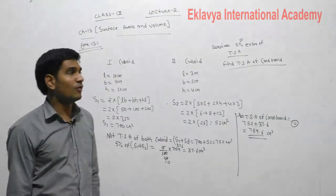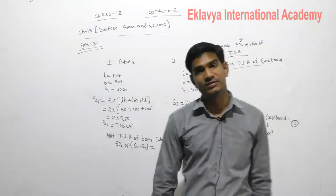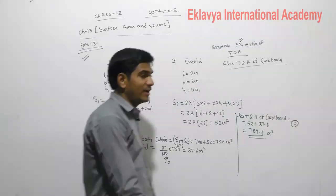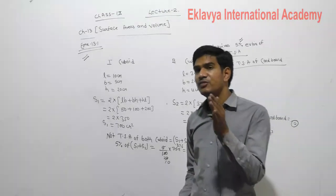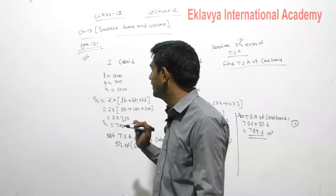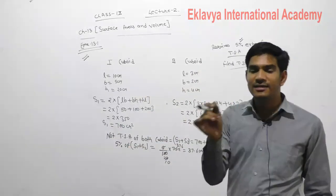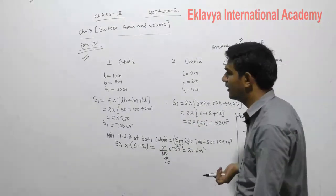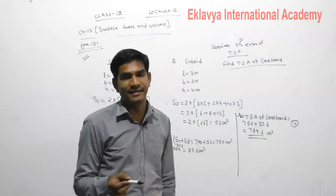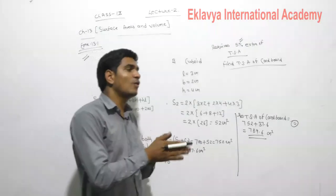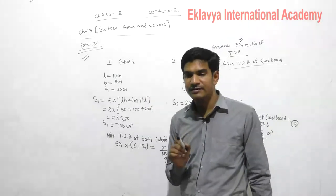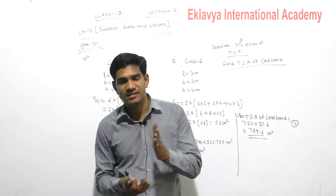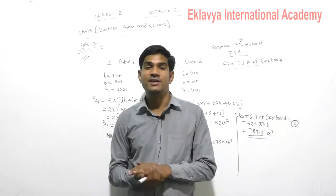These are all the types of questions present in Exercise 13.1. Today you will do Exercise 13.1 with examples. You should read the questions properly, then identify what is given: length, breadth, height, area, cost — and what needs to be found: area, cost, or length of diagonal — it depends on what the question is asking. In the next lecture we will discuss Exercise 13.2, which is based on the cylinder. Complete Exercise 13.1 first. Thank you.